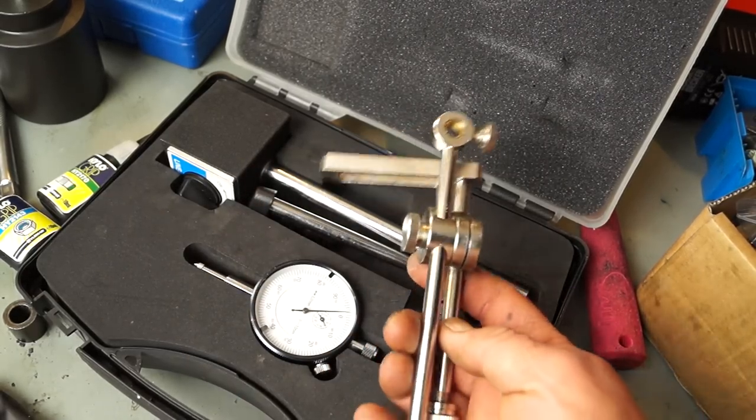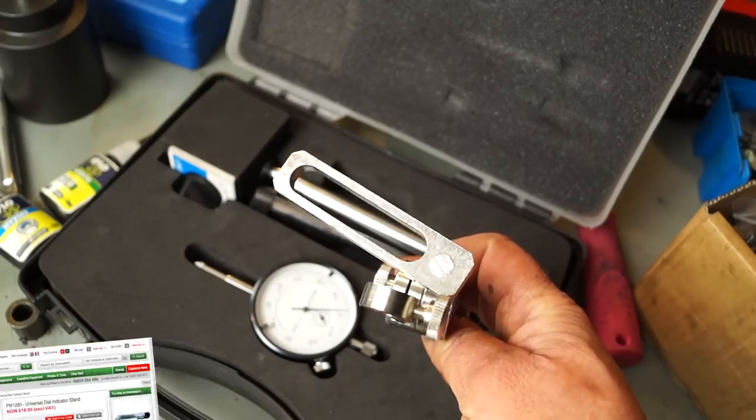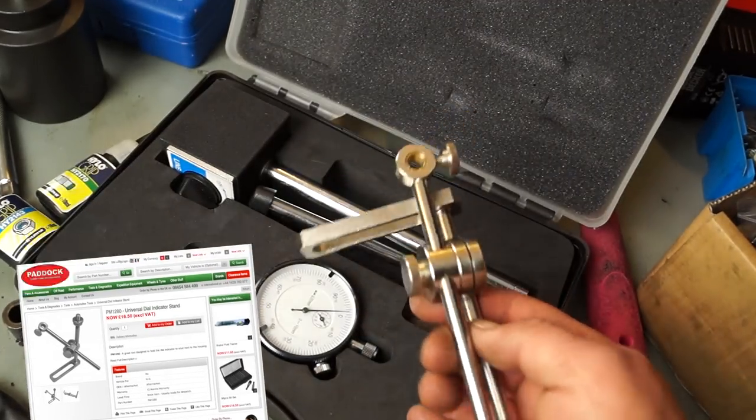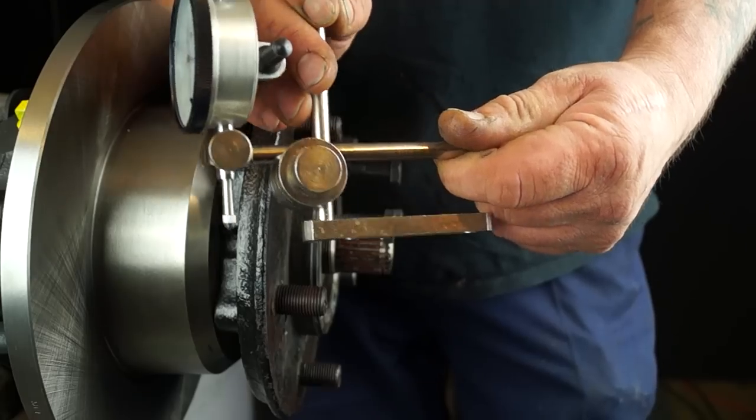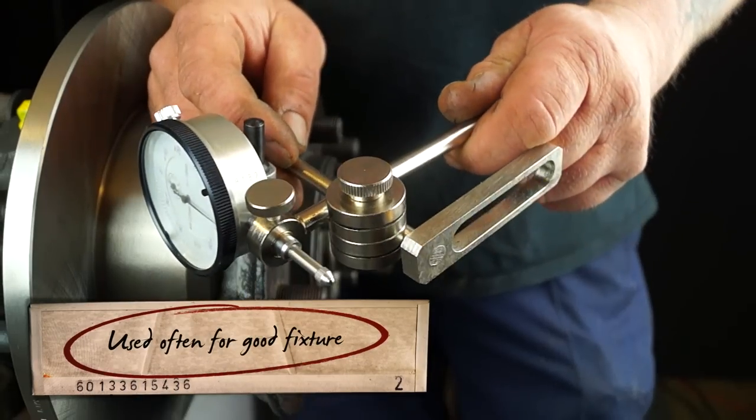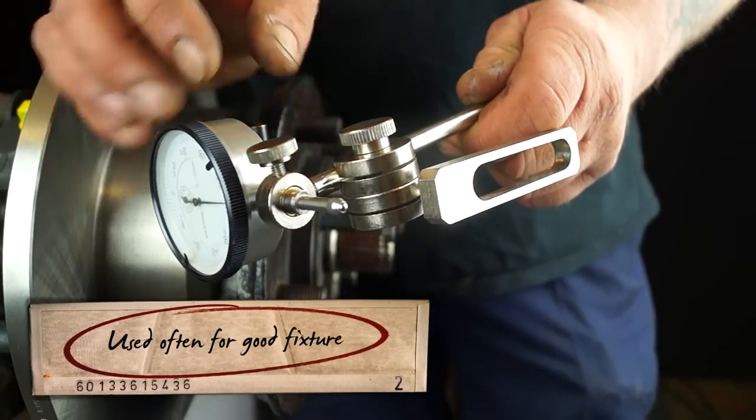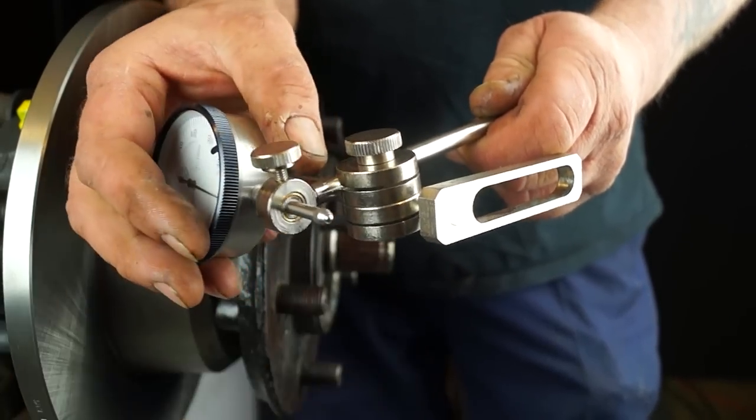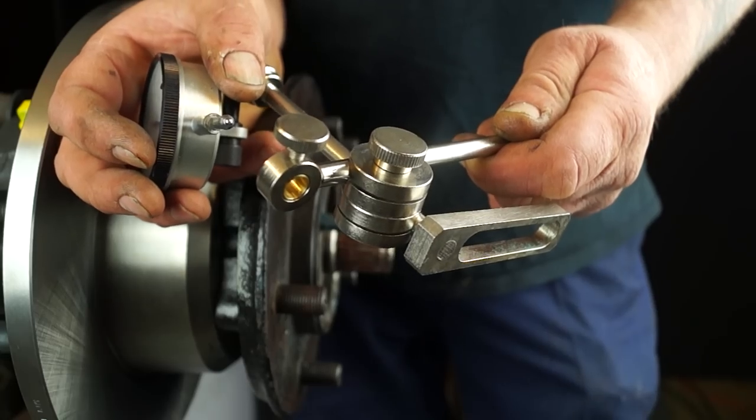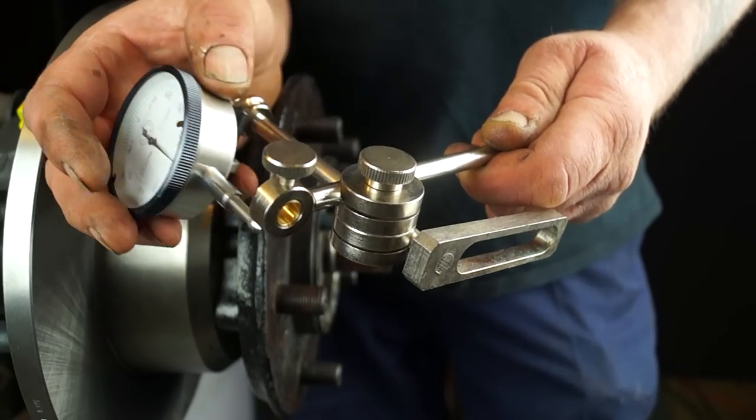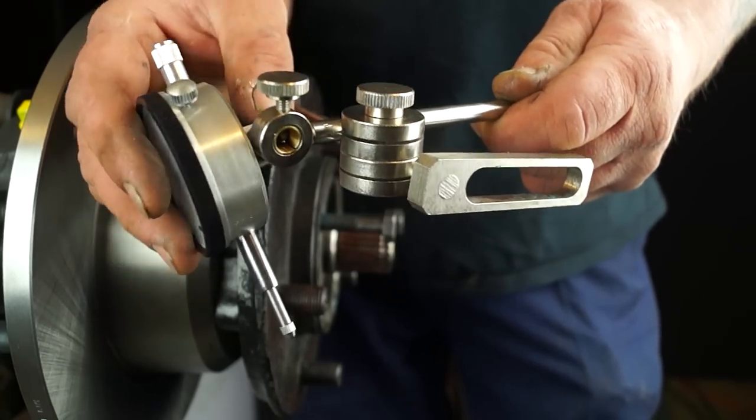At some point you'll also need a bolt on bracket like this. This is available from Paddock and this bracket itself is quite handy. It fits a standard dial gauge - there are different types, slots in there. You don't need to crush that up too tight in that hole and it will do the job just nicely.